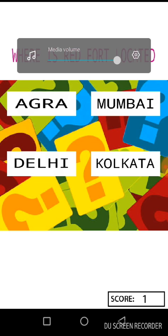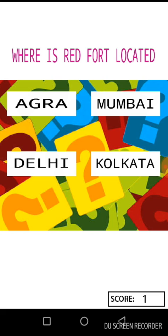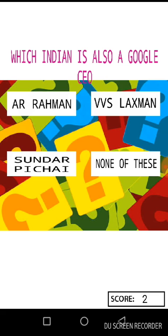First of all, I will enable the media volume because you cannot hear it. Now the second question is in front of me — the capital of India. The answer to this question is Delhi. I'll press Delhi. Yes, that's good. Now the third question: which Indian is the Google CEO?